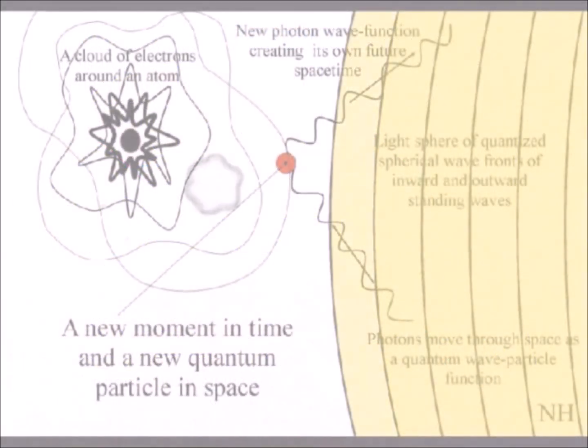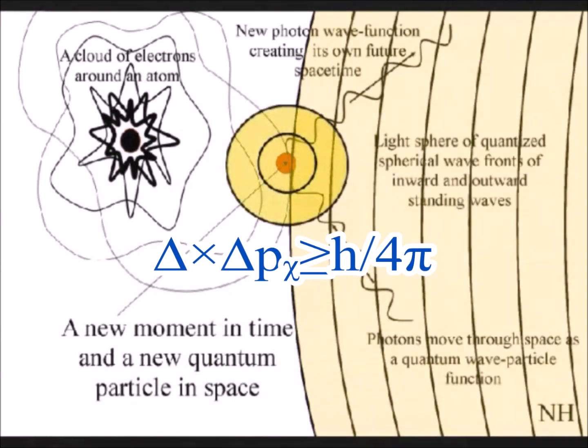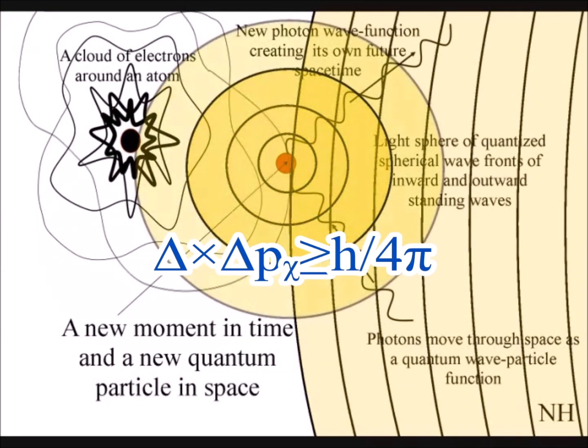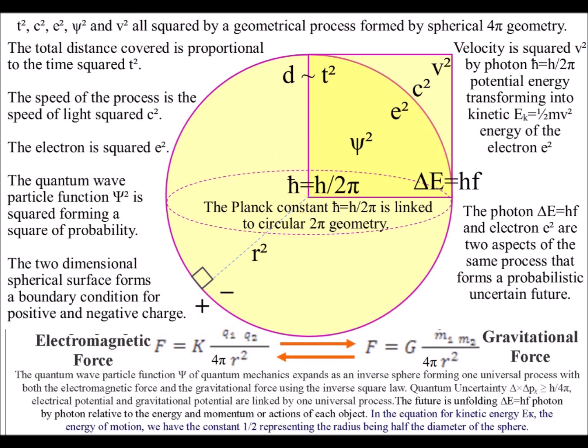Because the process is relative to the spherical surface, we have to square the radius. This can be seen in the equations of physics, with the speed of light squared, the electron squared, and the wave function squared.